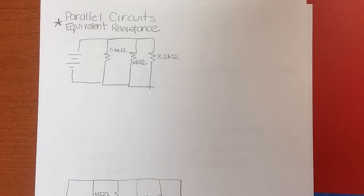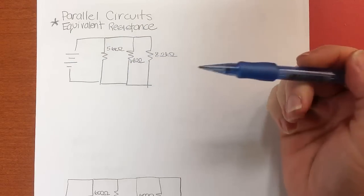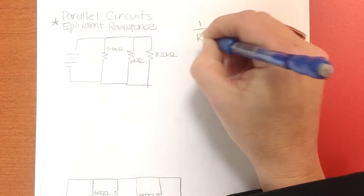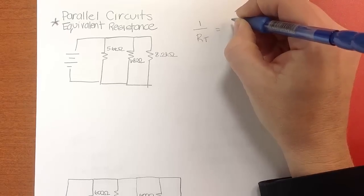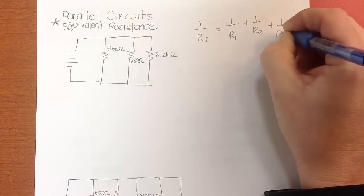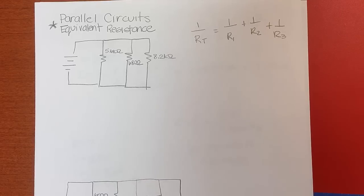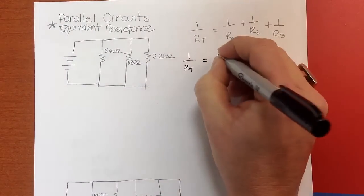Let's work on a few parallel circuits equivalent resistance problems. For a parallel circuit equivalent resistance, it doesn't matter what the voltage is. The formula is: 1 over R_T (or R_eq) is equal to 1 over R1 plus 1 over R2 plus 1 over R3. So the way we do this — let me write it a little better — we go: 1 over R_T is equal to...